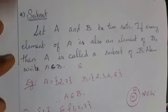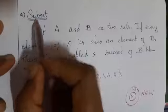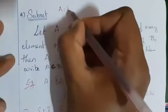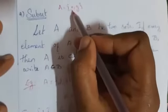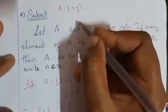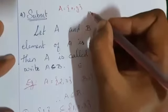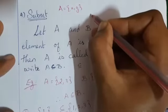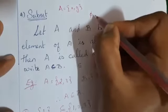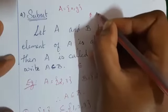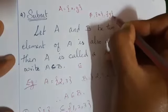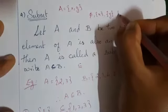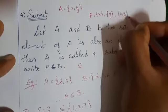One more thing you need to know about subsets. If you have a set A equal to {x, y}, what are the subsets of this set? Empty is also a subset. Next, only {x} is also a subset. Only {y} is also a subset. Then {x, y} is also a subset.